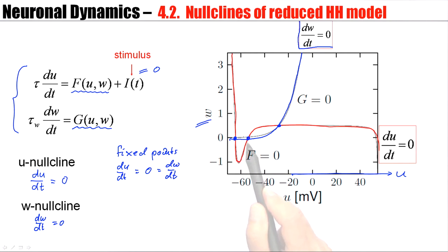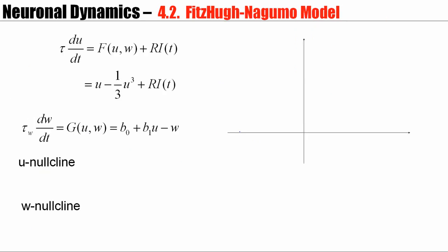Once the voltage U and the auxiliary variable W sit here, they no longer change. This is the first fixed point, second fixed point, third fixed point. It turns out that this fixed point is stable. So the nullclines allow us to find graphically fixed points of the dynamics. However, with nullclines we can do much more than just finding fixed points.